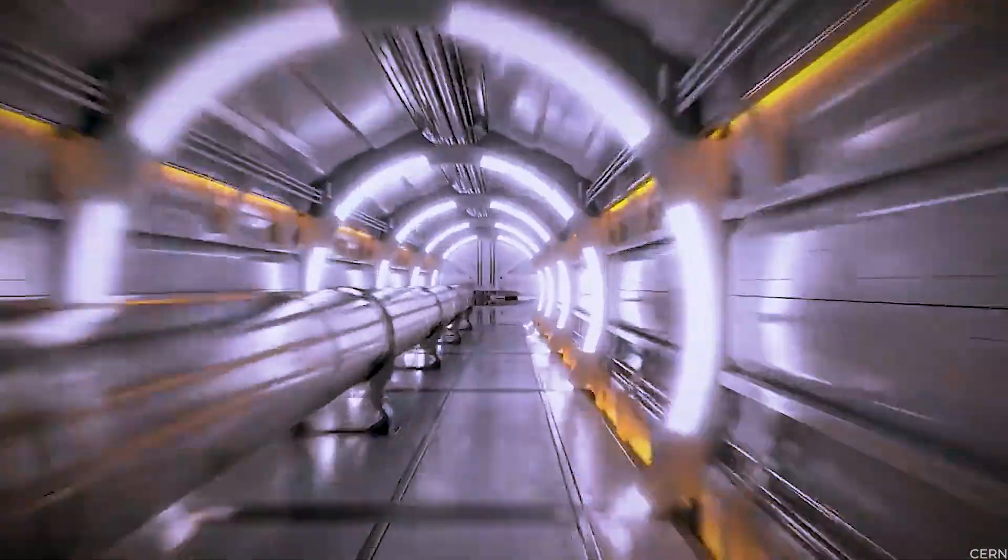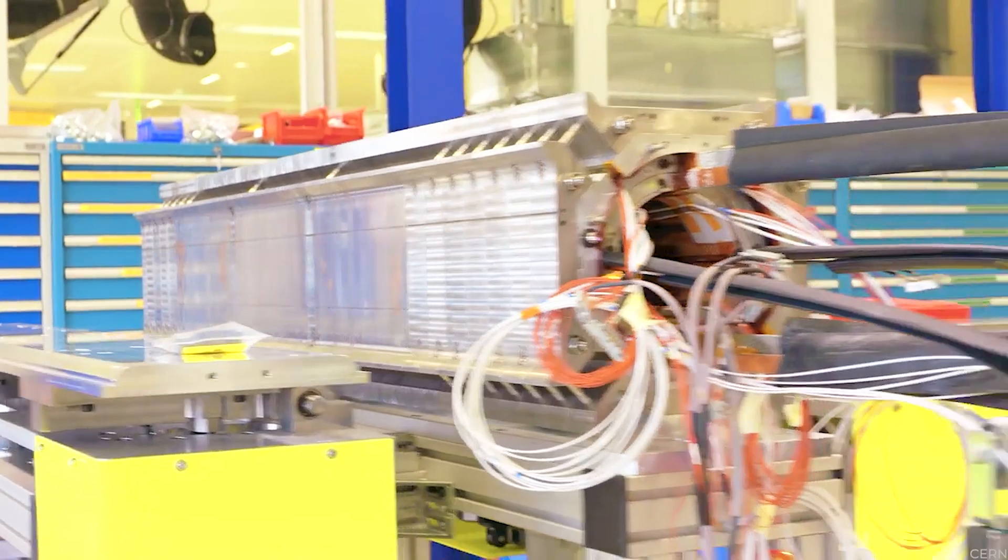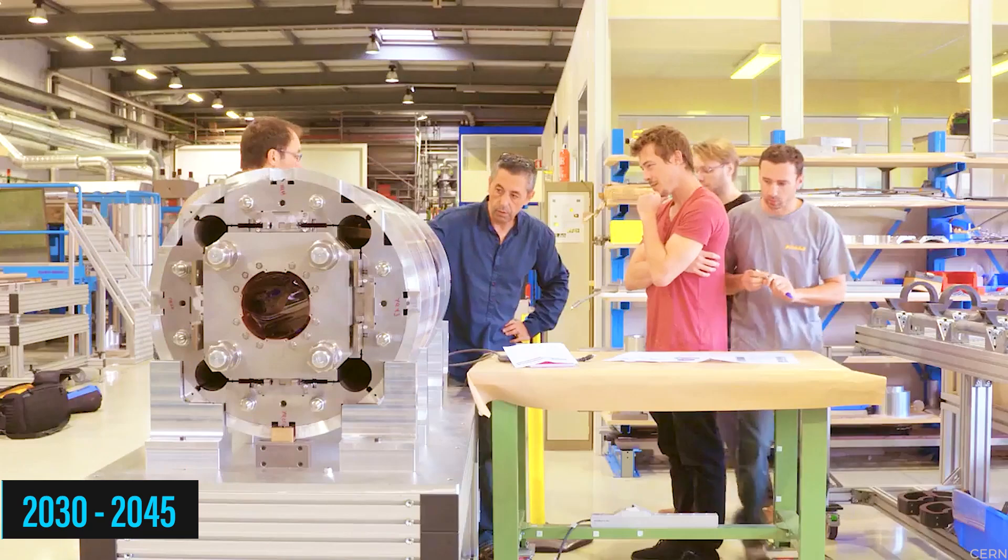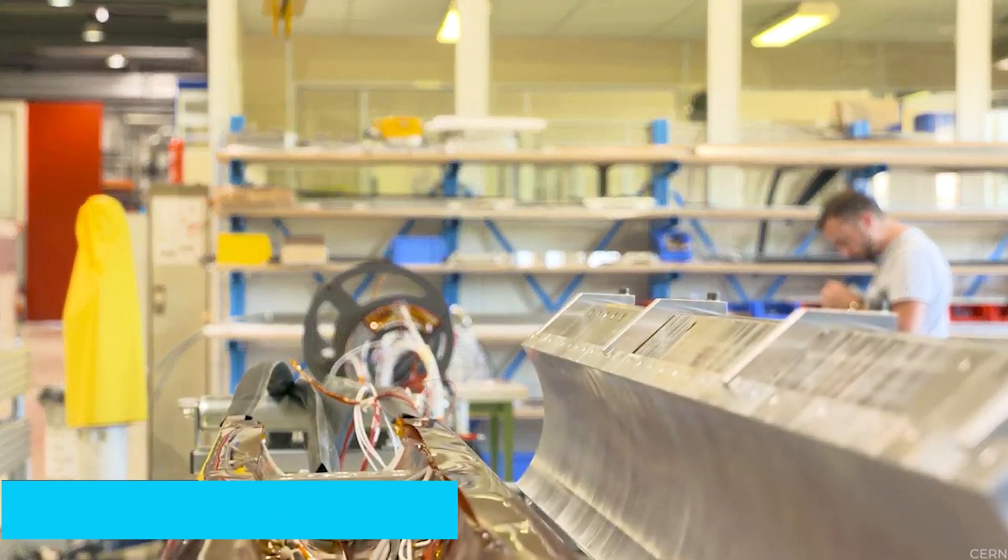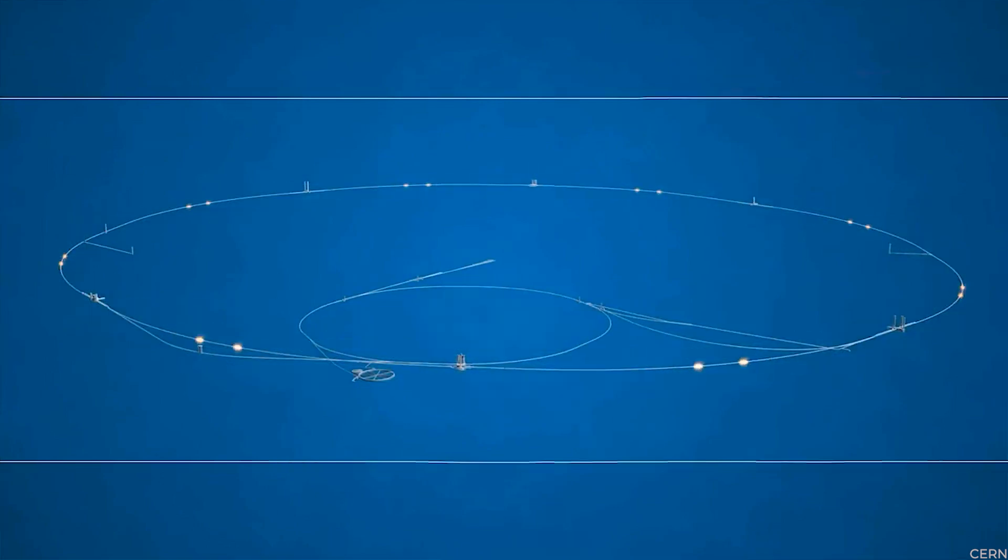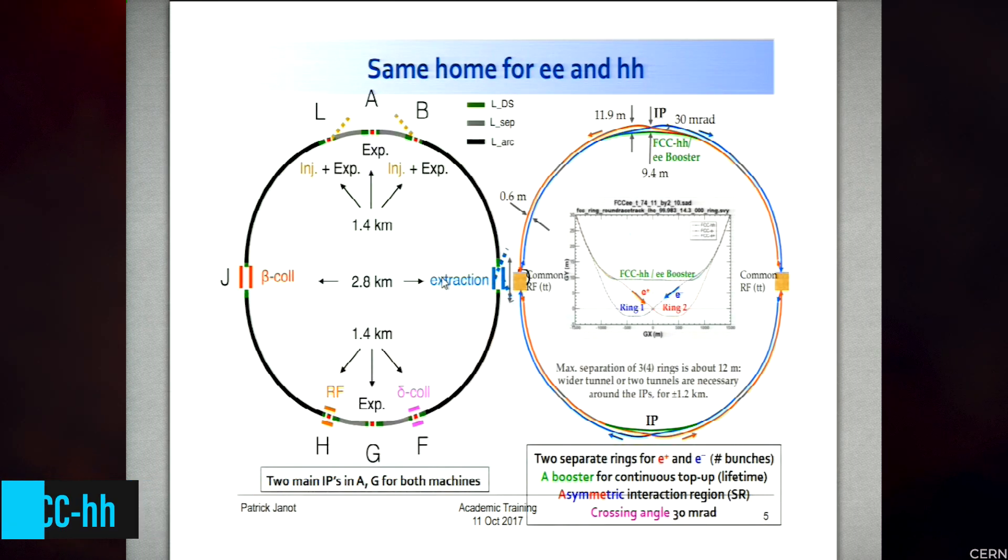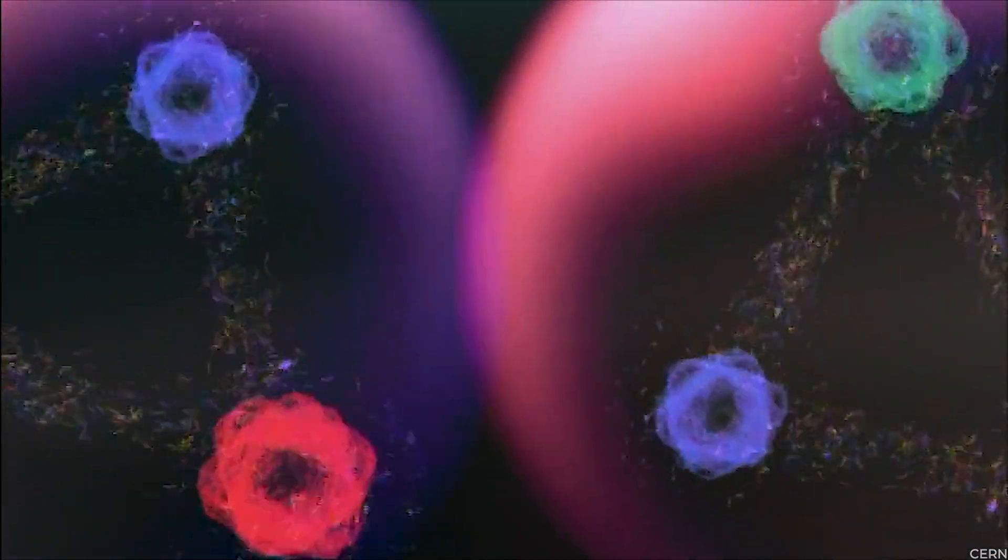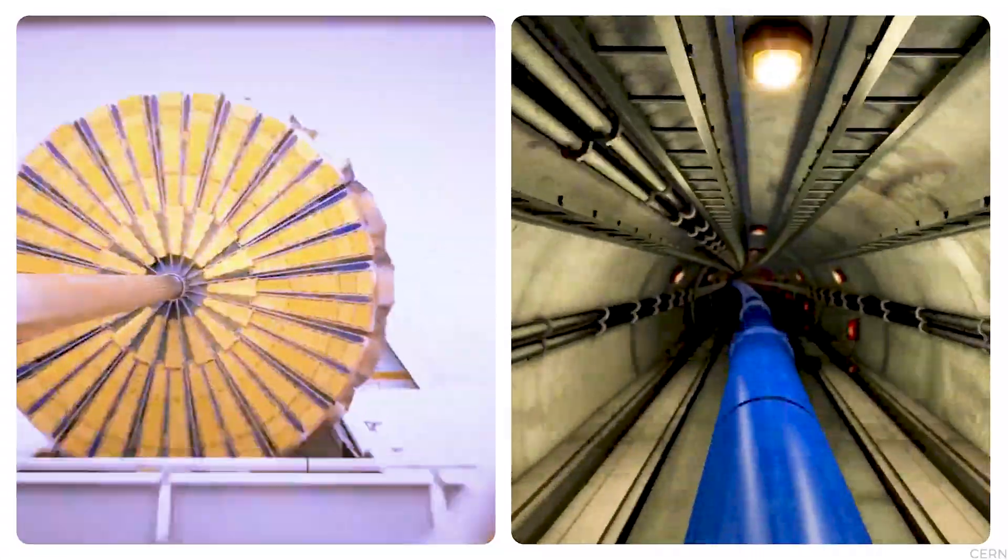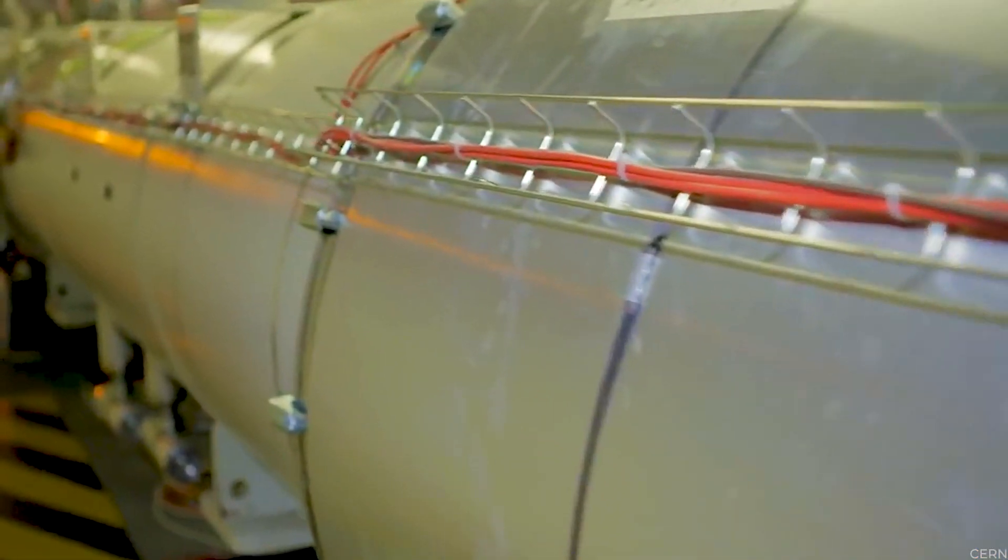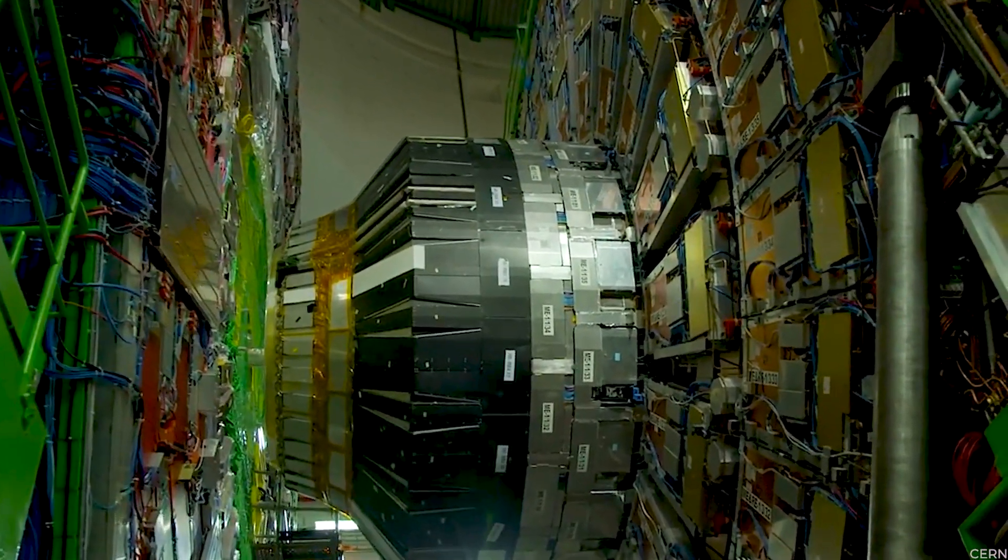The aim is to surpass the capabilities of the LHC and unlock new secrets about this elusive particle. Enthusiastic supporters of the FCC envision the construction of the FCCEE beginning in the early 2030s, with hopes of completing it by 2045. That's like embarking on an epic scientific adventure spanning more than a decade. Once the FCCEE completes its mission, the same tunnel can be repurposed for the second phase, called the FCCHH. This next-level collider would be a proton-proton-smashing powerhouse, boasting an astonishing seven times the energy of the LHC.